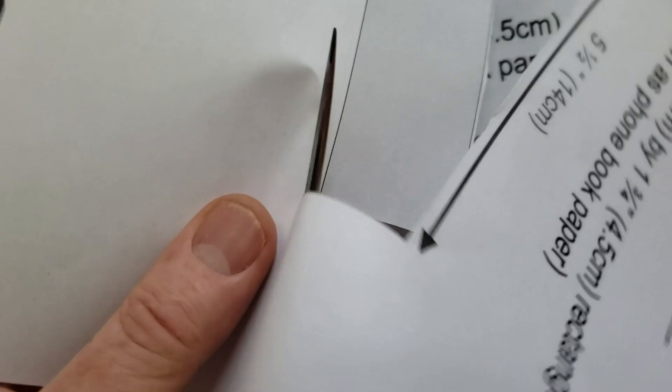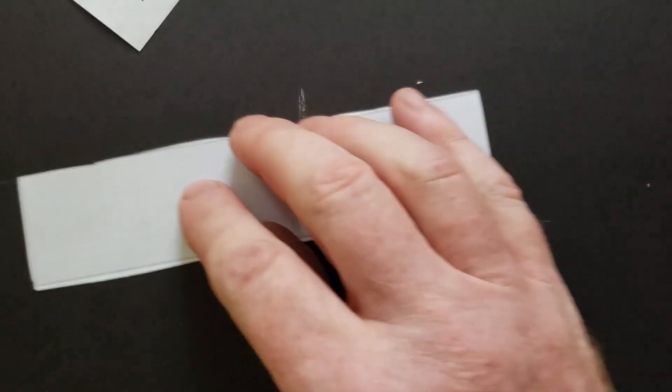But most important, it will fly under your control. Cut out a 14 centimeter by 4.5 centimeter rectangle of light paper, such as phone book paper.